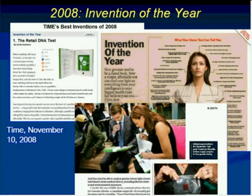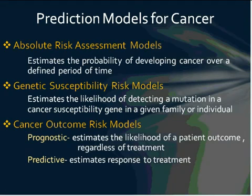In 2008, Time Magazine declared this the retail DNA test year, where everybody was spitting into a cup and sending their DNA away to several different companies covering different types of diseases. There's still a lot of question about the utility of these types of tools, and I know at least three or four companies that are still going strong pursuing this area of research. But today we're really talking about prediction models for cancer.